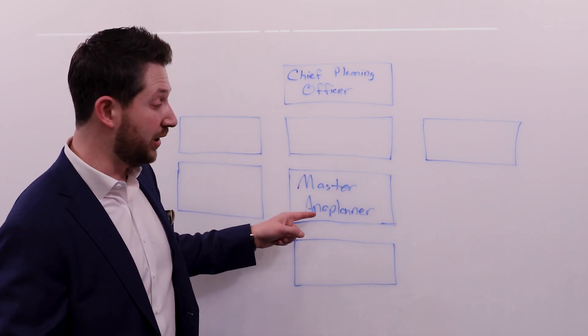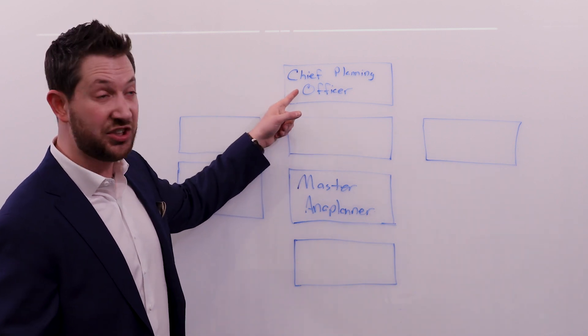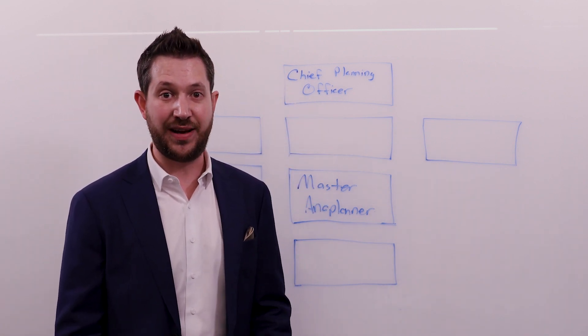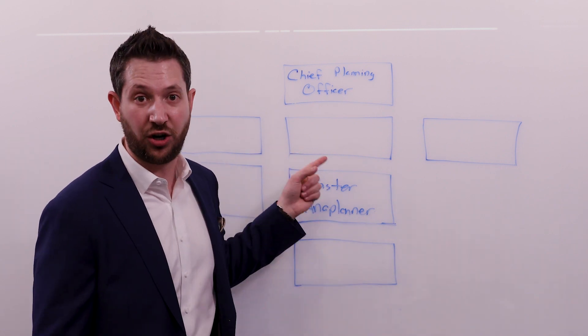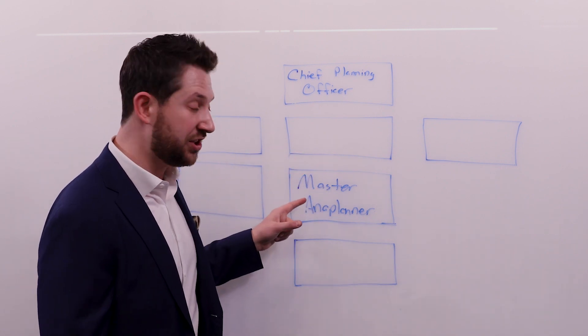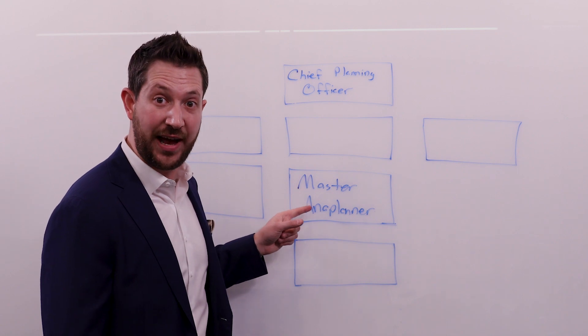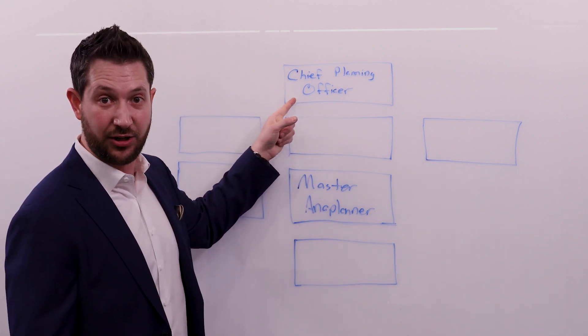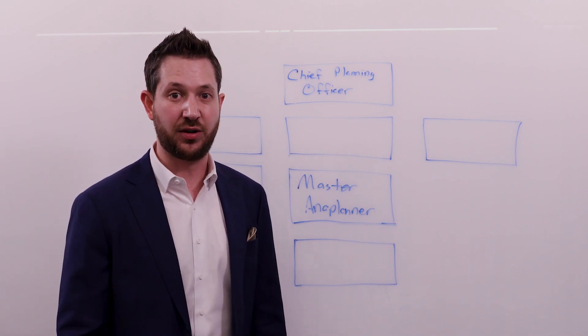So between these two people, the Master Anaplaner and the Chief Planning Officer, that's really what you need for a successful center of excellence, and this is a great starting point. With both understanding the technical side of how to build Anaplan and the executive oversight, one strong executive leader, that's a successful center of excellence.